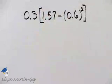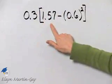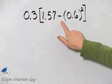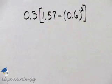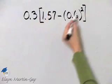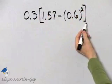Let's evaluate this expression: 0.3 times 1.57 minus 0.6 squared. Where do we begin? We begin within the grouping symbols, this set of brackets.